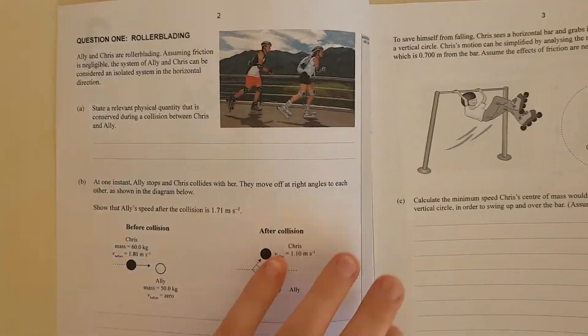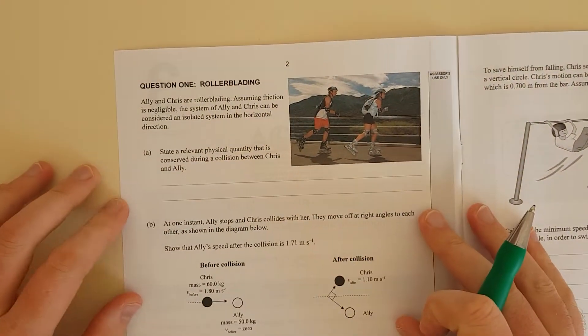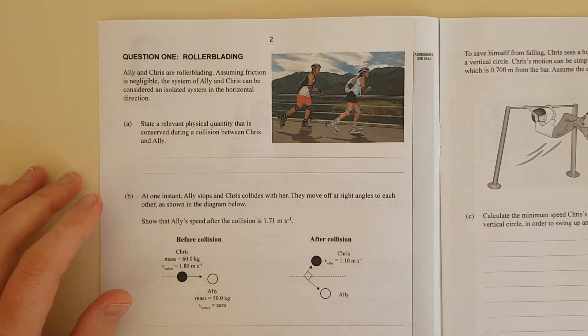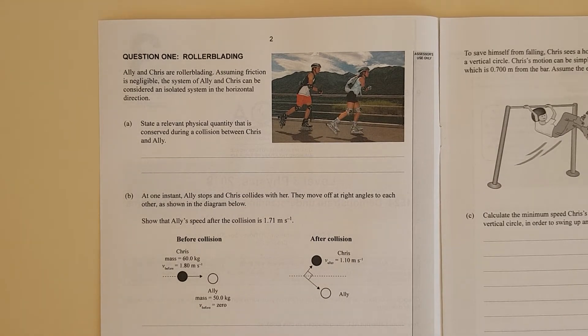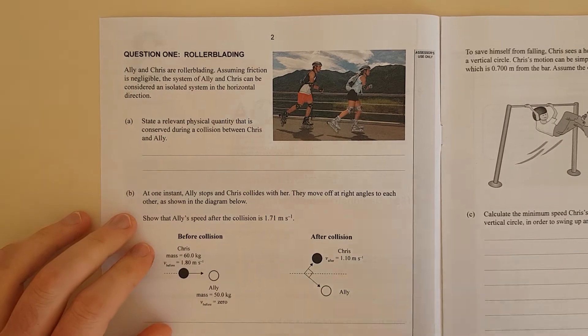Alright, question one. Ali and Chris are rollerblading. Assume friction is negligible. The system of Ali and Chris can be considered an isolated system in the horizontal direction. State any relevant physical quantity that is conserved during the collision between Chris and Ali.